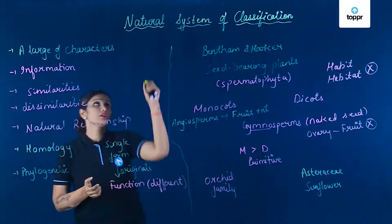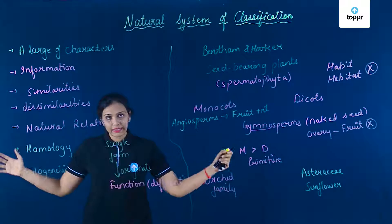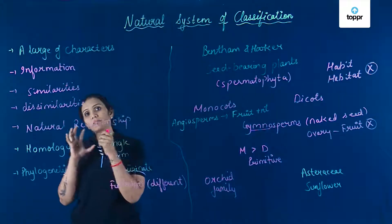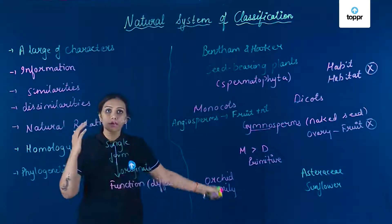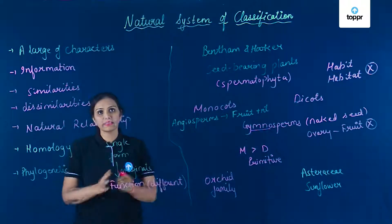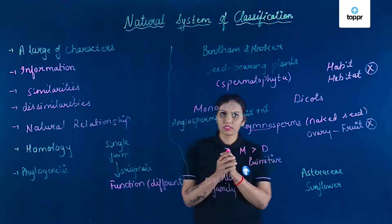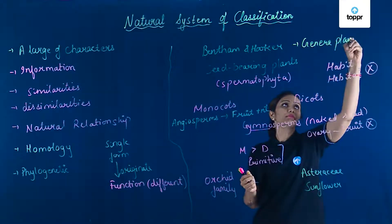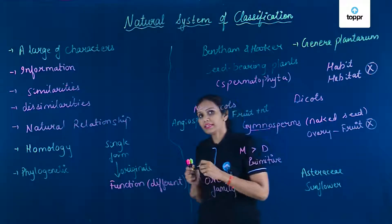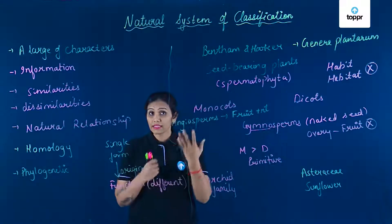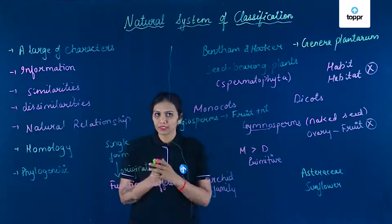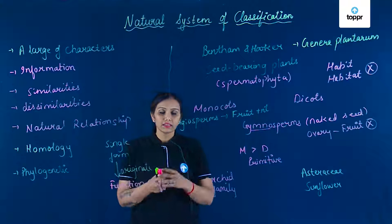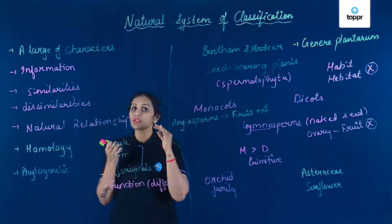Let's revise what we have seen up till now. We saw natural system of classification, jahan pe many characters use kiye gaye hain to classify the living organism. It gives an insight about the natural relationship among them, and an insight about the homology — kis tarah se woh ek single form se originate hokar different functions ko perform karne ke liye various groups mein categorize hue. One such example is given by Bentham and Hooker in Genera Plantarum, jahan pe Spermatophyta ko classify kiya into monocot, dicot, and gymnosperm. Monocot ke andar advanced family orchid family hai, dicot ke andar sunflower family. So it gives an insight about natural relationship and homology.